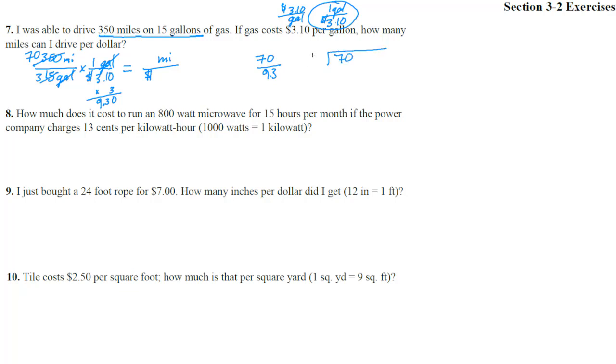We're going to take 70 divided by 9.3. Move the decimal there, move the decimal one more. So we actually get 93 divided into 700. And we may have some decimals here. 93 goes into 7? No. 70? No.